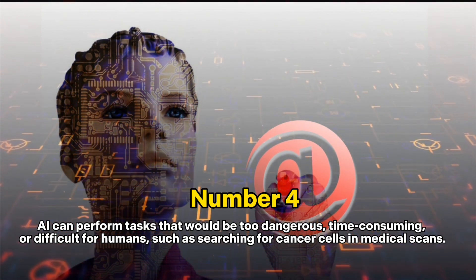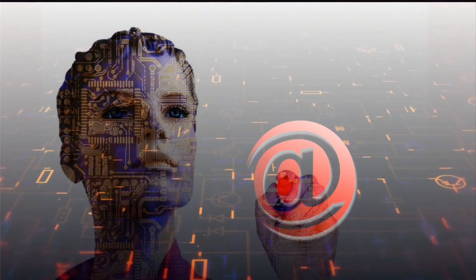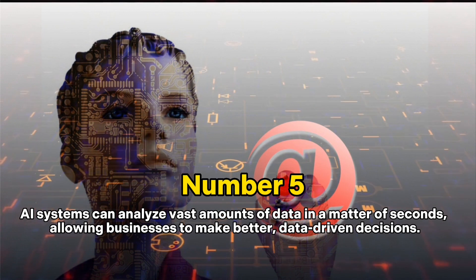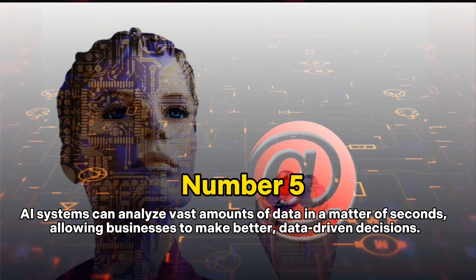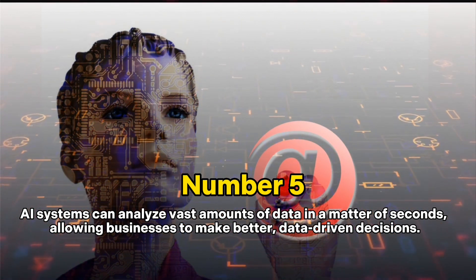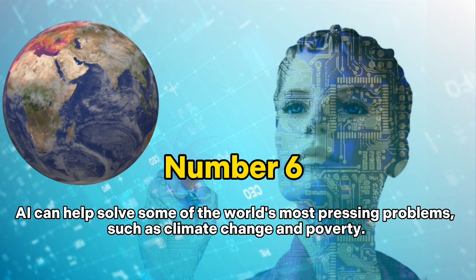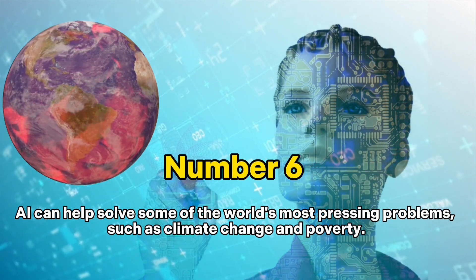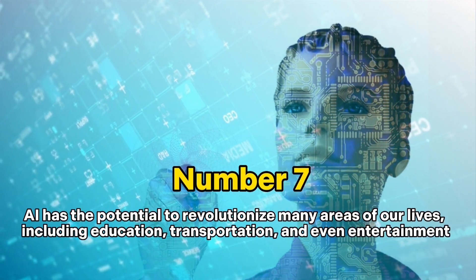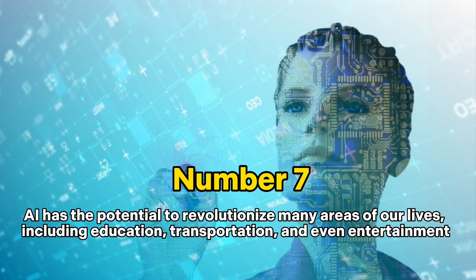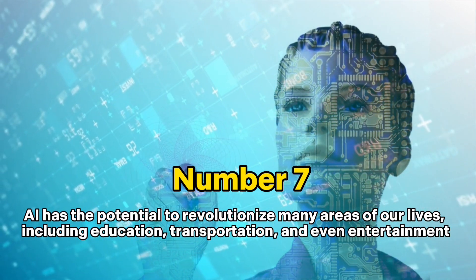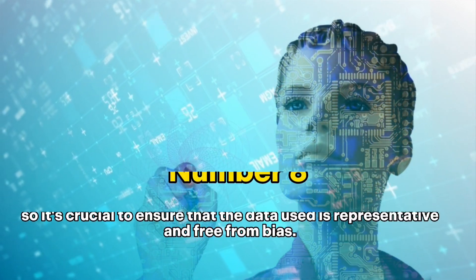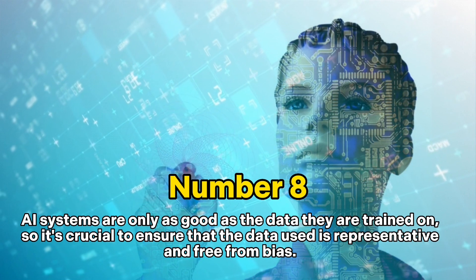Number four: AI can perform tasks that would be too dangerous, time-consuming, or difficult for humans, such as searching for cancer cells in medical scans. Number five: AI systems can analyze vast amounts of data in a matter of seconds, allowing businesses to make better data-driven decisions. Number six: AI can help solve some of the world's most pressing problems, such as climate change and poverty.